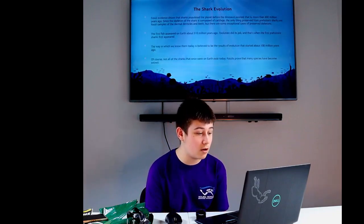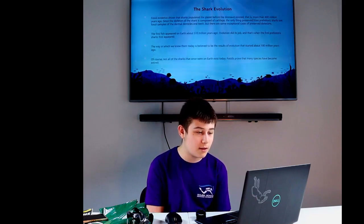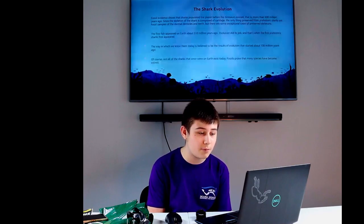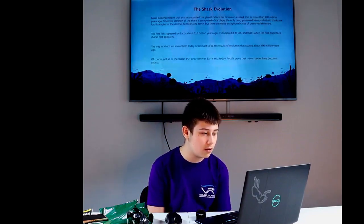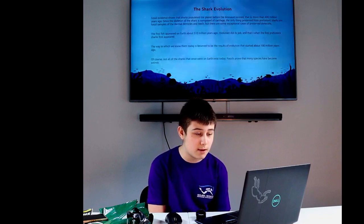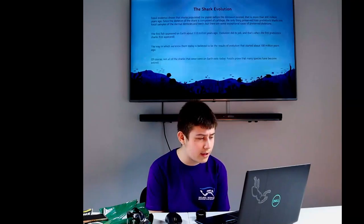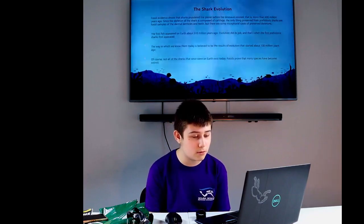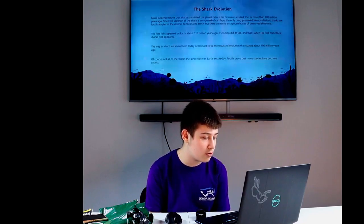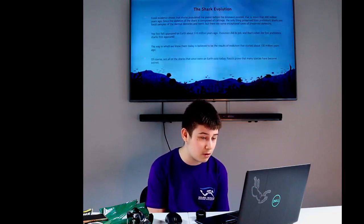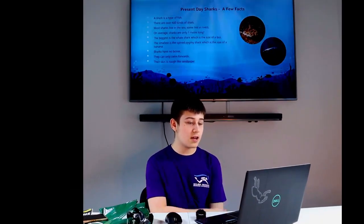Shark evolution: Fossil evidence shows sharks populated the planet before dinosaurs existed. That is more than 400 million years ago. Since the skeleton of a shark is composed of cartilage, the only thing preserved from the prehistoric sharks are their dermal denticles and teeth, except exceptional cases of preserved skeletons. The first fish appeared on earth about 510 million years ago. Evolution did its job. And that's when the first prehistoric sharks appeared. The way in which we know them today is believed to be the result of evolution that started about 100 million years ago. Of course not all sharks that once were on earth exist today. Fossils prove that many species have become extinct.